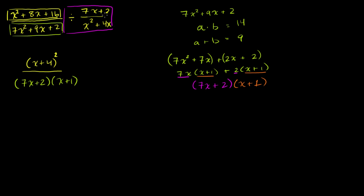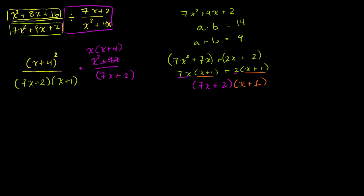Dividing by that expression is the same thing as multiplying by its inverse, so we flip the numerator and denominator to get x squared plus 4x over 7x plus 2. And we can factor an x out of x squared plus 4x, giving us x times x plus 4.